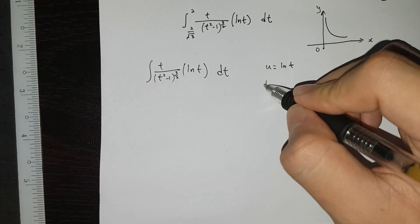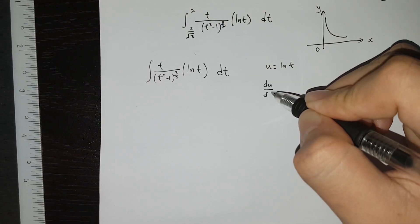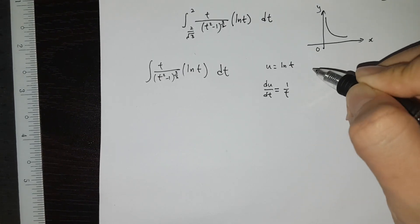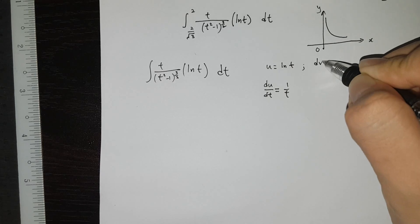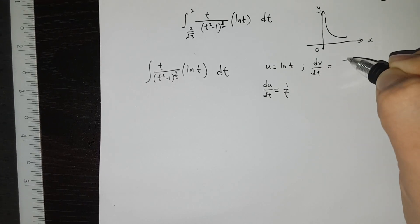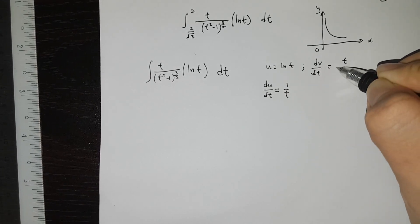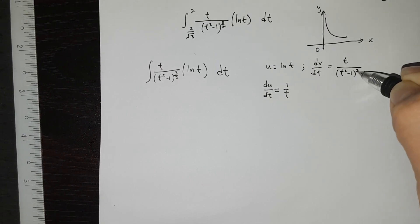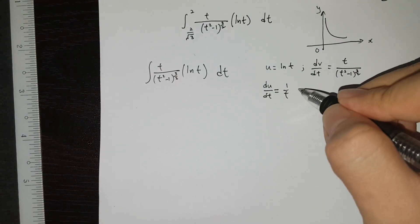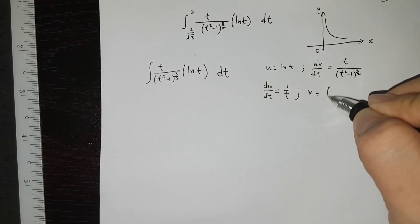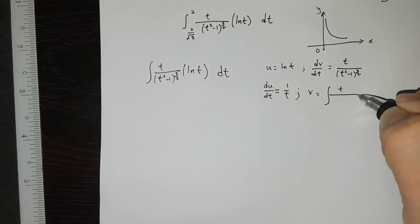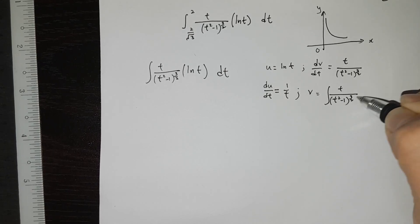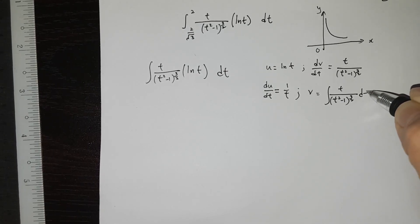For U, you should use ln T because we are unable to integrate ln T unless you use by parts. U is ln T because we know that we could easily differentiate U, which is ln T, giving 1 over T. On the other hand, dV/dT is given by T over (T squared minus 1) to the power of 3 over 2.